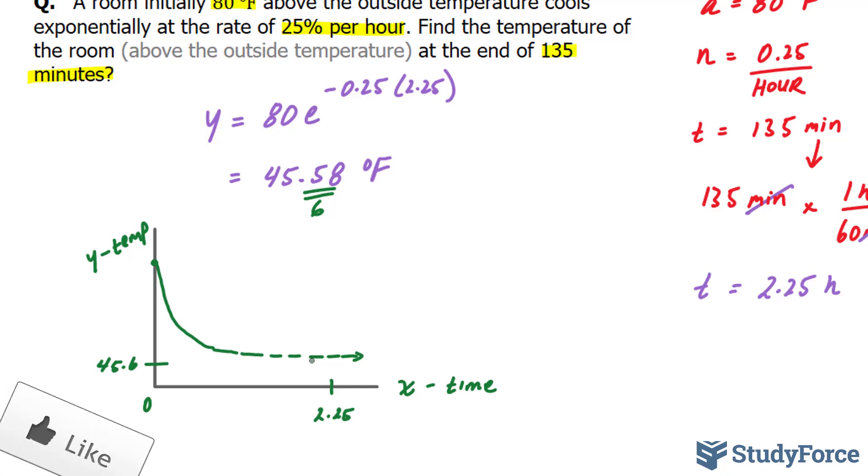For example, hot steel cools quickly, whereas cool steel cools slowly.